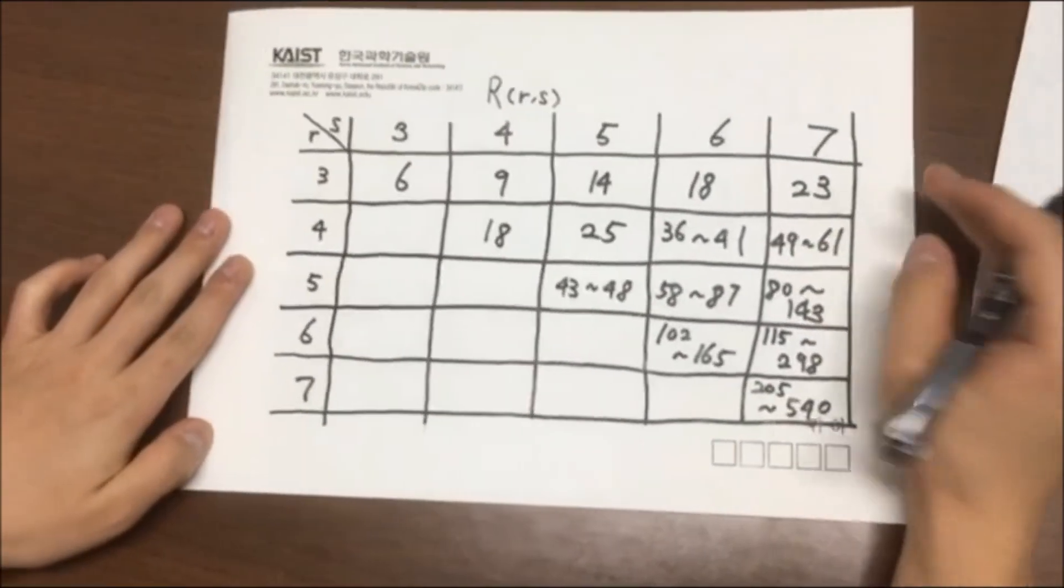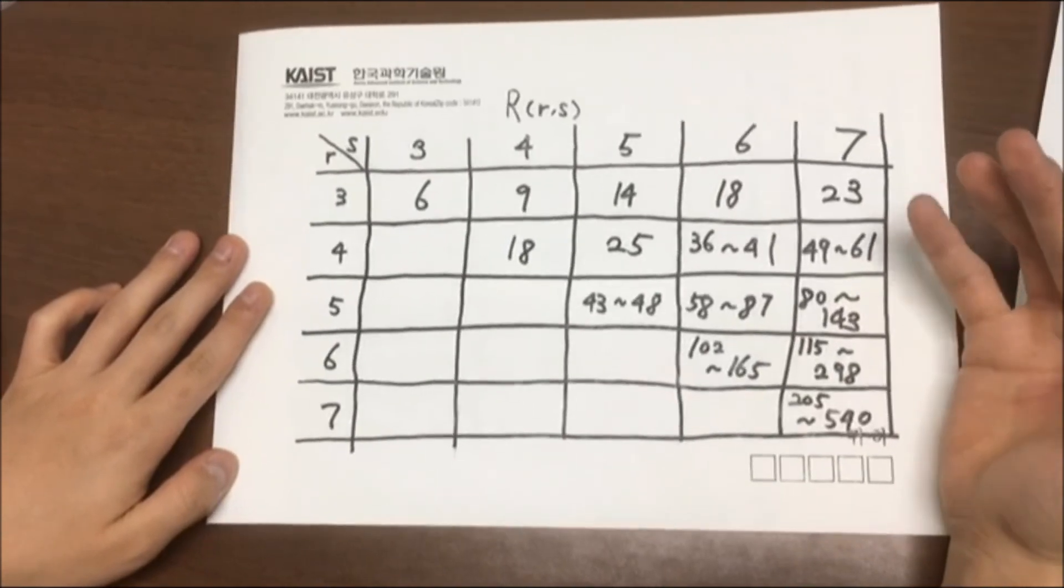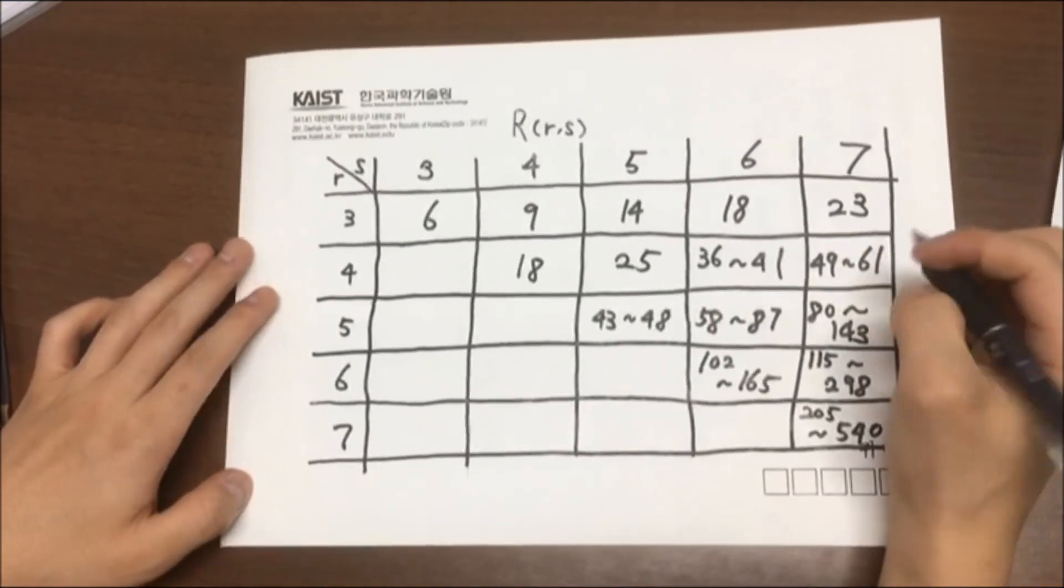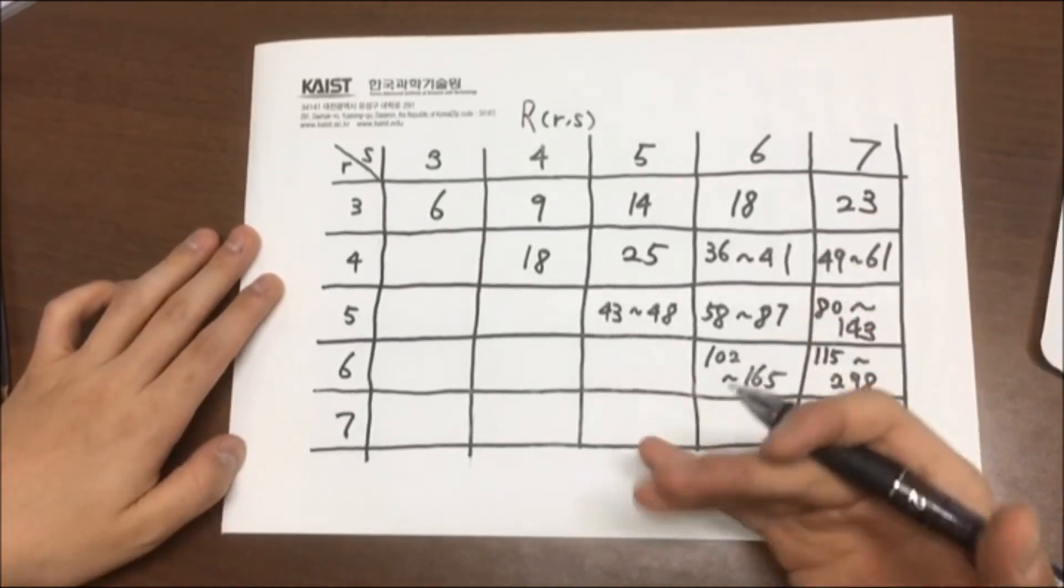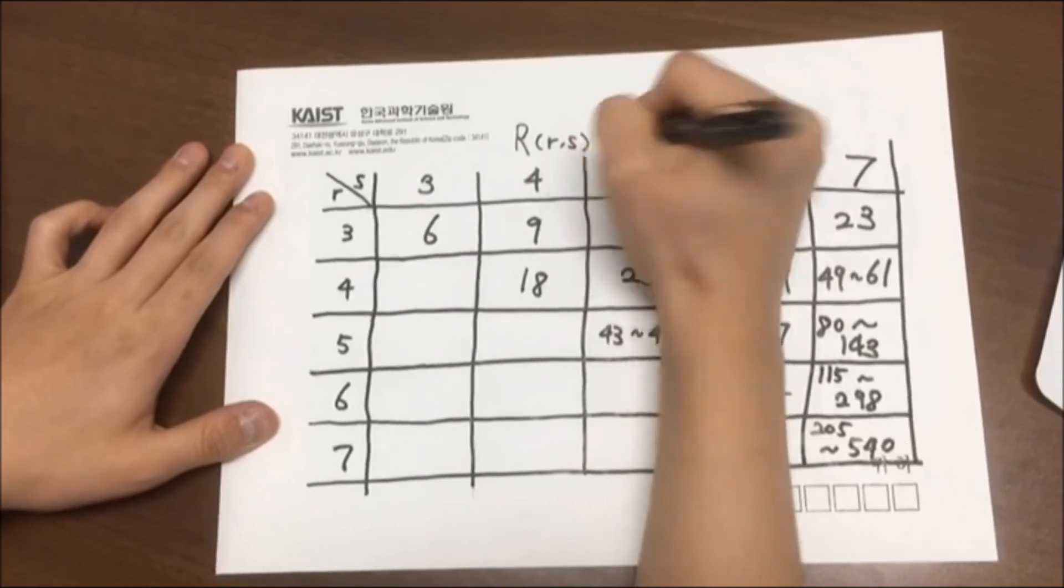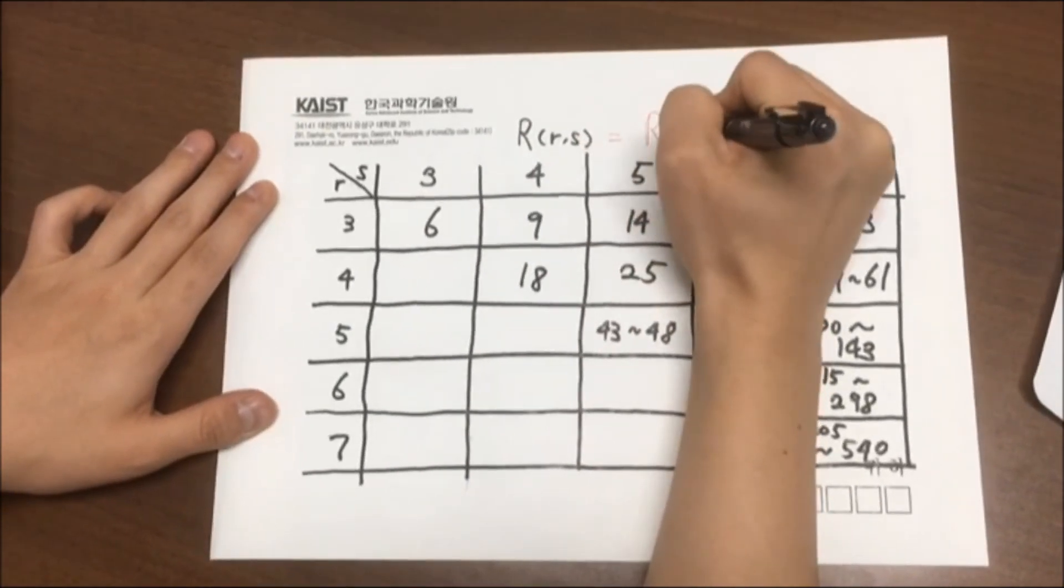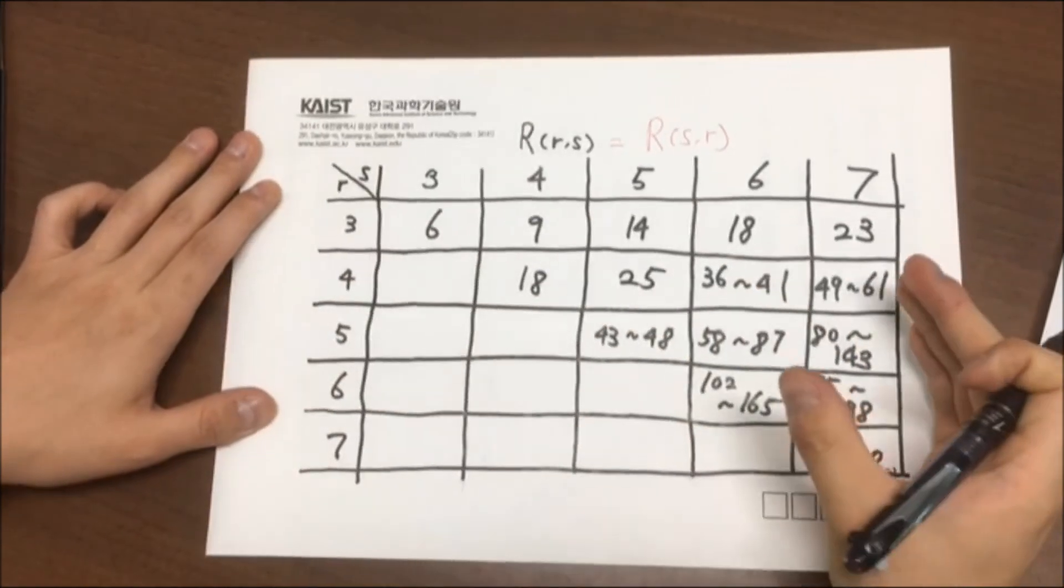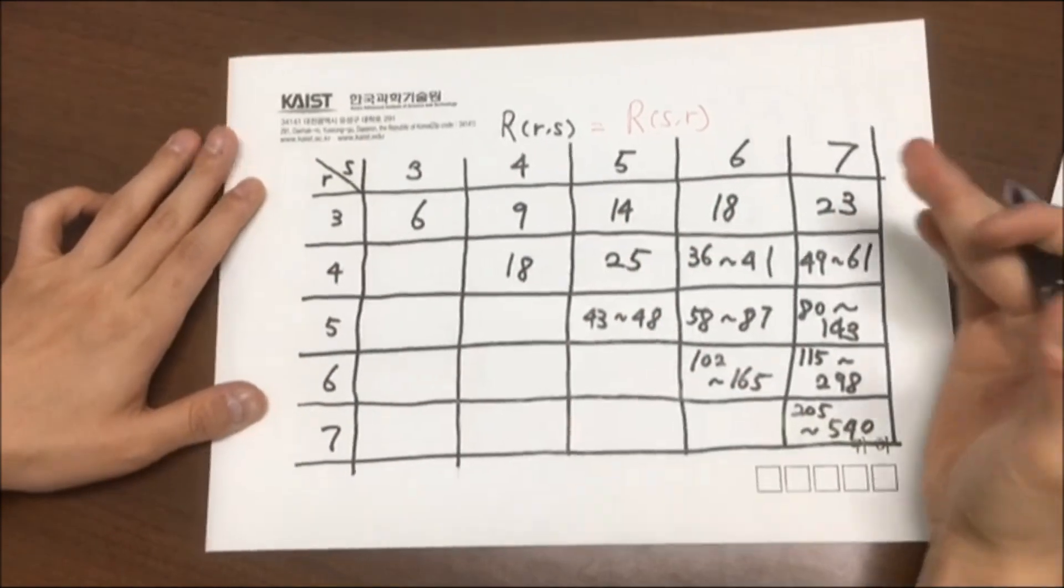And here it is. I know table is in bad shape, just bear with me please. And notice that half of the table is missing because R(R,S) is equivalent to R(S,R). So basically this side is equivalent with this side. So it is left empty.